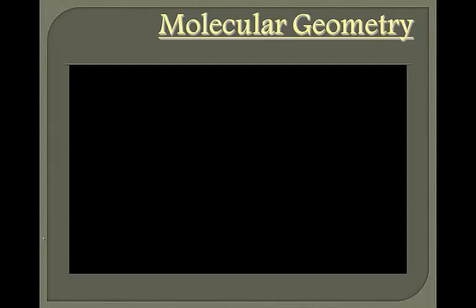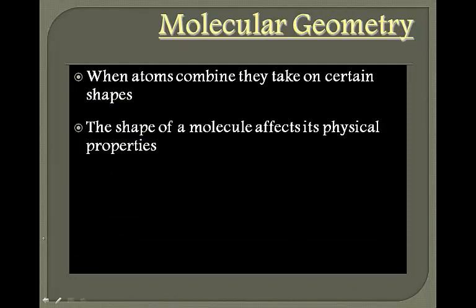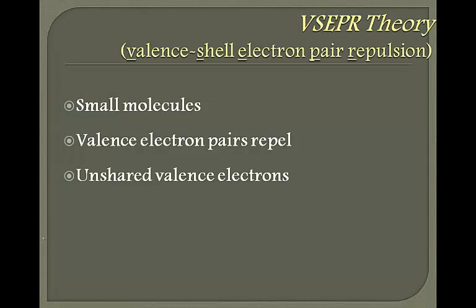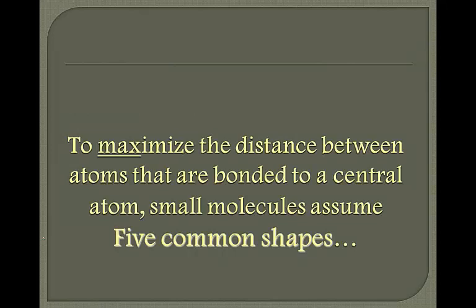Molecular geometry: when atoms combine they take on certain shapes. These shapes allow pairs of valence electrons to arrange themselves as far away from each other as possible. The shape of a molecule affects its physical properties such as boiling point and melting point. The VSEPR theory — the Valence Shell Electron Pair Repulsion theory — works with small molecules where the valence electron pairs repel each other, because electrons are negatively charged and want to occupy as much space as possible to maximize the distance between atoms bonded to a central atom.